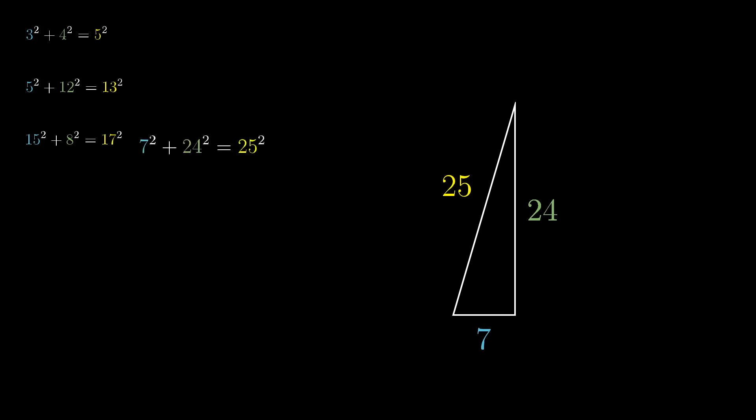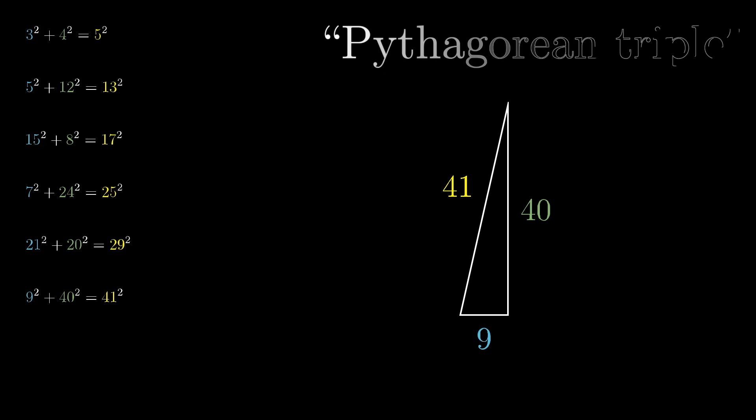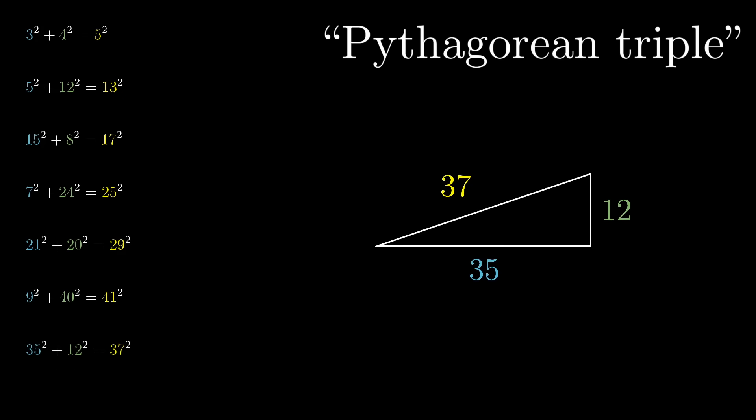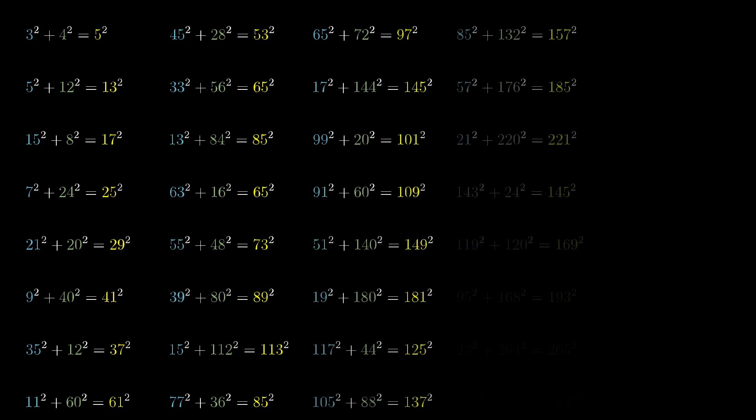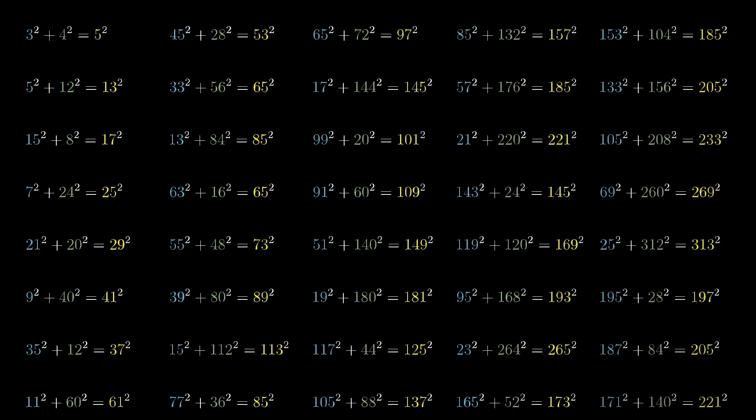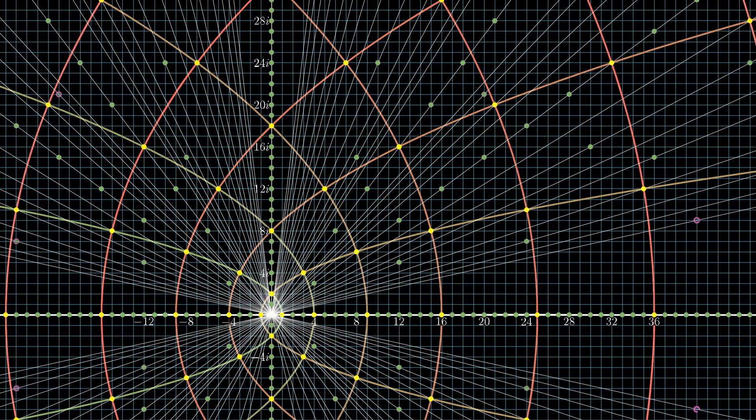Now there's a special name for any triplet of whole numbers a, b, c, where a squared plus b squared equals c squared. It's called a Pythagorean triple. And what we're going to do here is find every single possible example. And moreover, we'll do so in a way where you can visualize how all of these triples fit together. This is an old question, pretty much as old as they come in math.